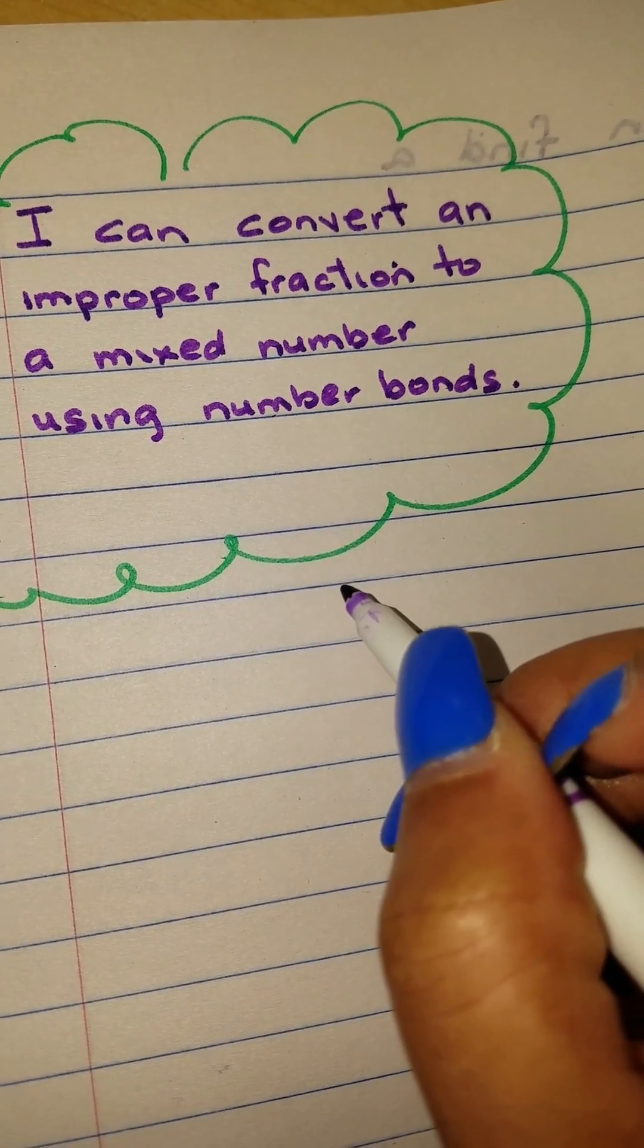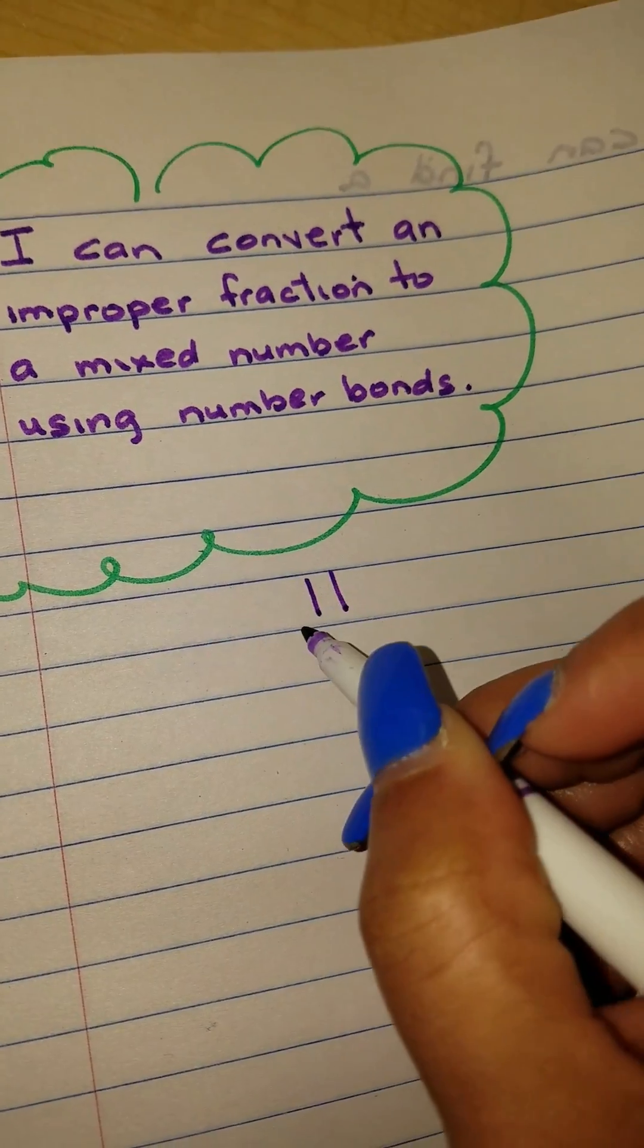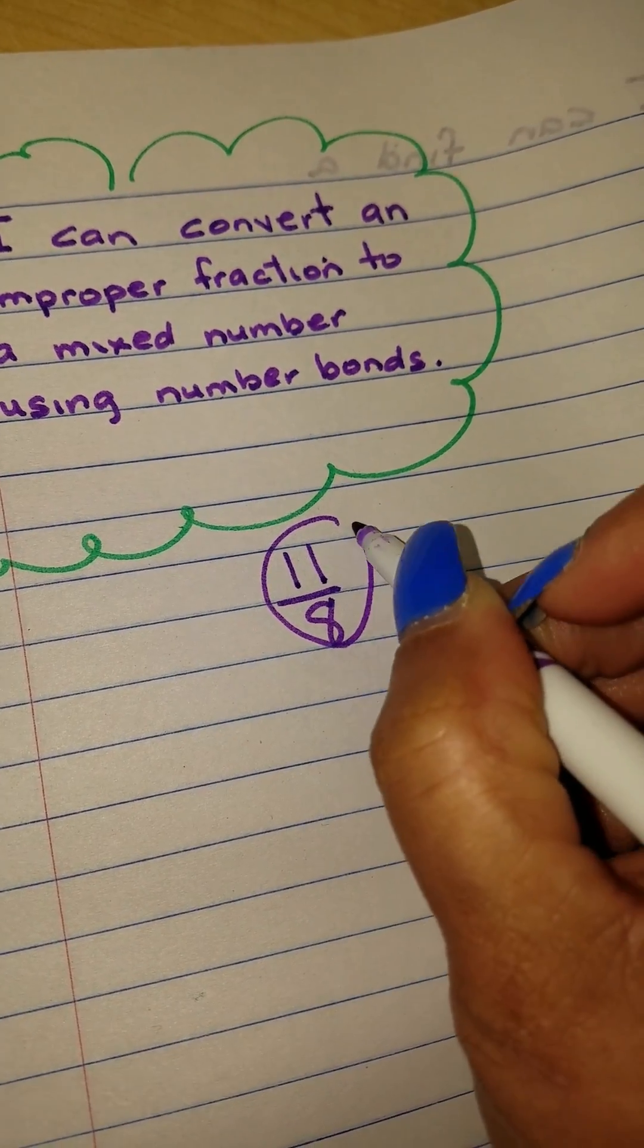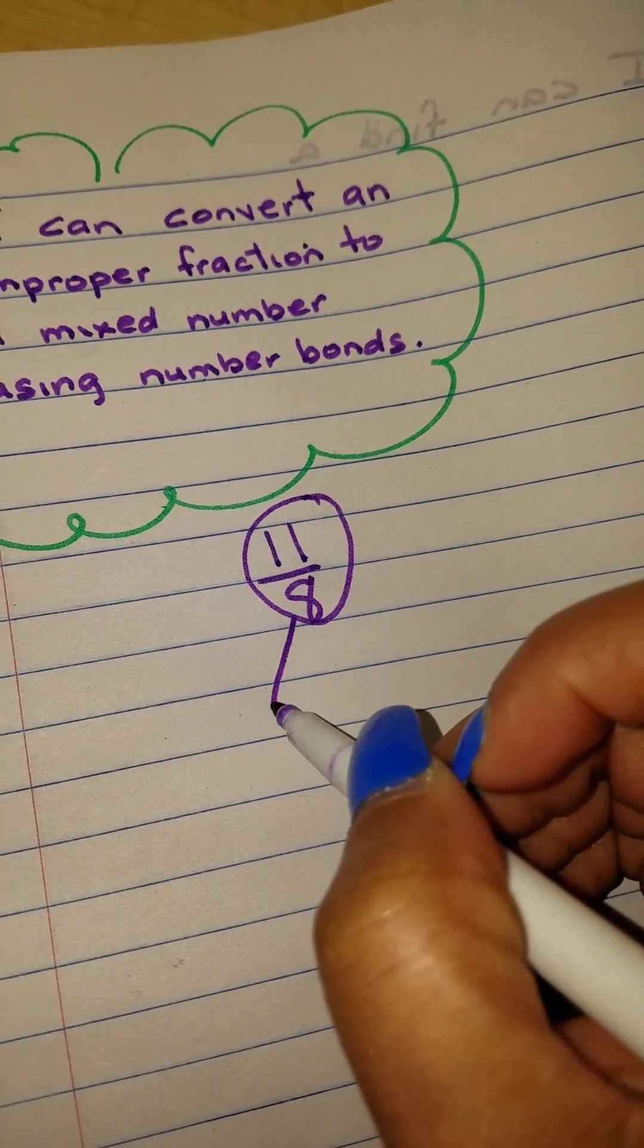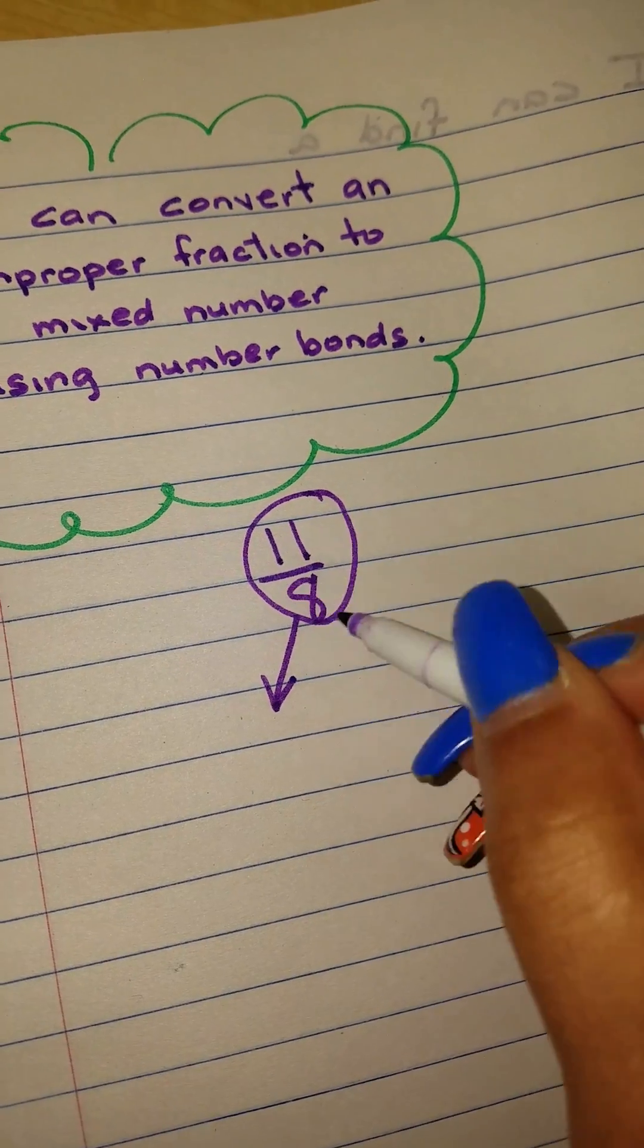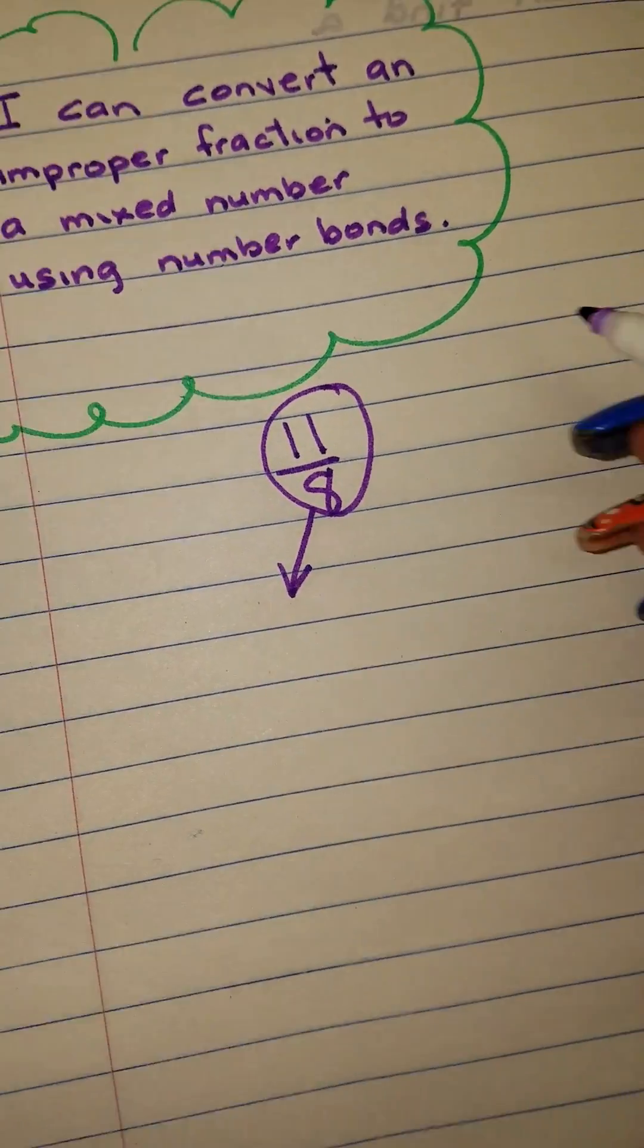So here is our first improper fraction. Our improper fraction will be 11 eighths. How do we create a number bond? We set out groups of wholes from these fractions in order to combine those so that we can get back our 11 eighths.